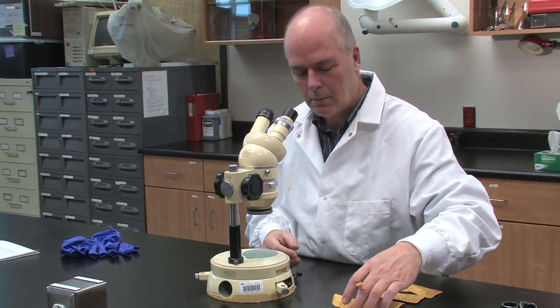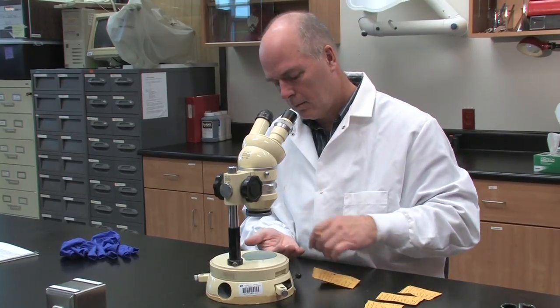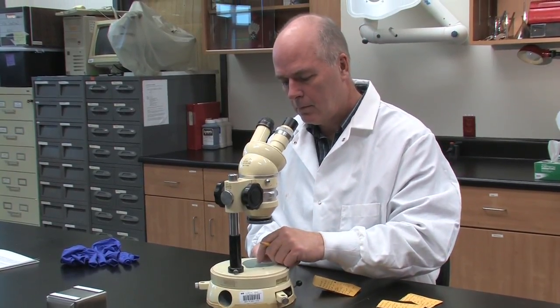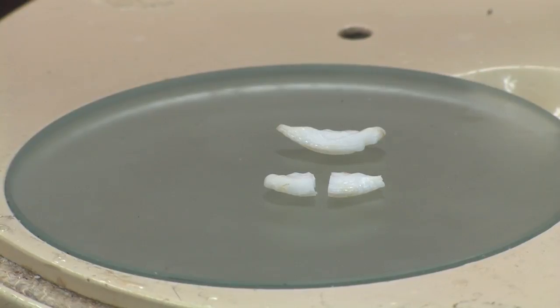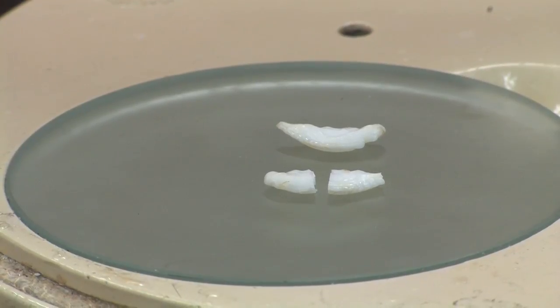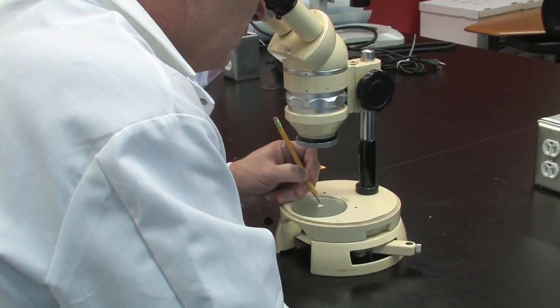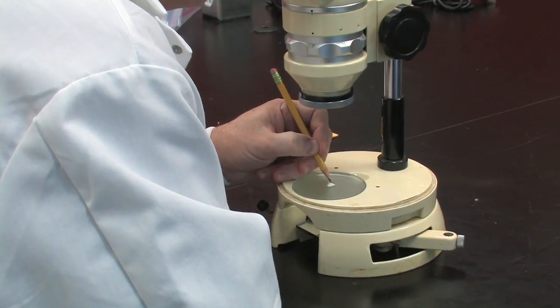You can still use broken otoliths in this embedding process as well. Typically, a break will happen right around the middle, but as long as you can still mark the core, a broken otolith can be put back together and embedded the same way as you would a whole otolith.